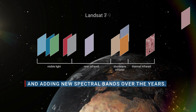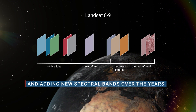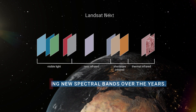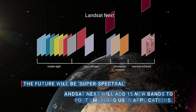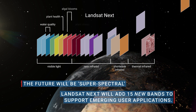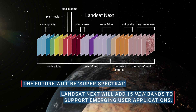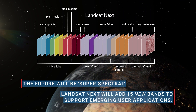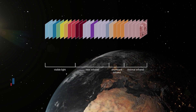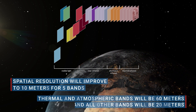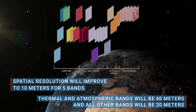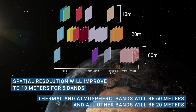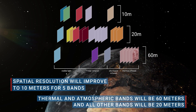Satellite images typically feature multiple bands representing various wavelengths across the electromagnetic spectrum. For example, Landsat Next imagery will collect data from 26 bands, including visible, near-infrared, mid-infrared, short-wave infrared, and thermal infrared regions.